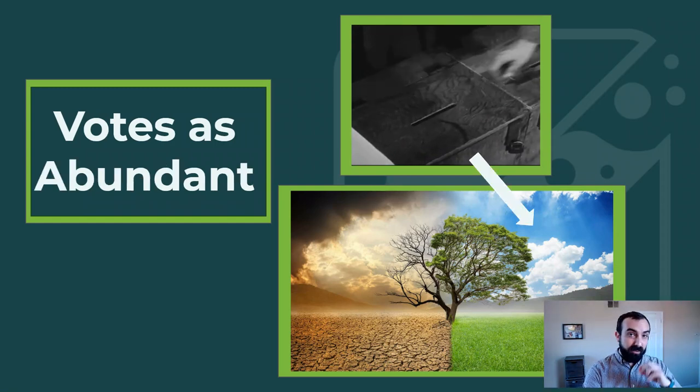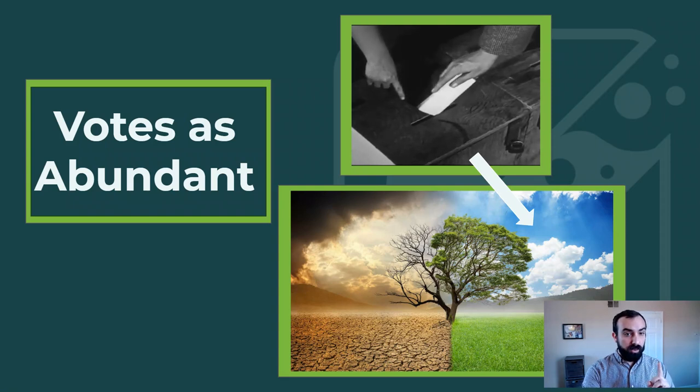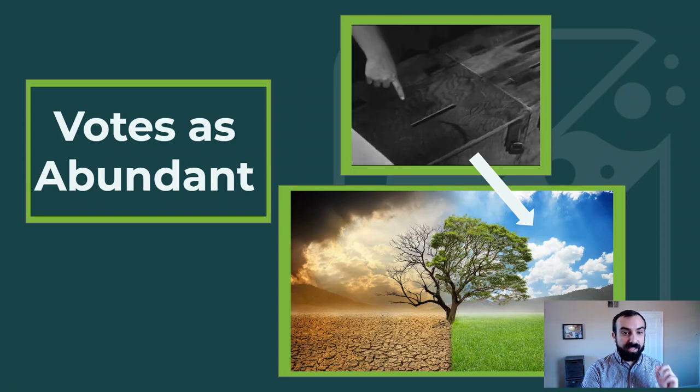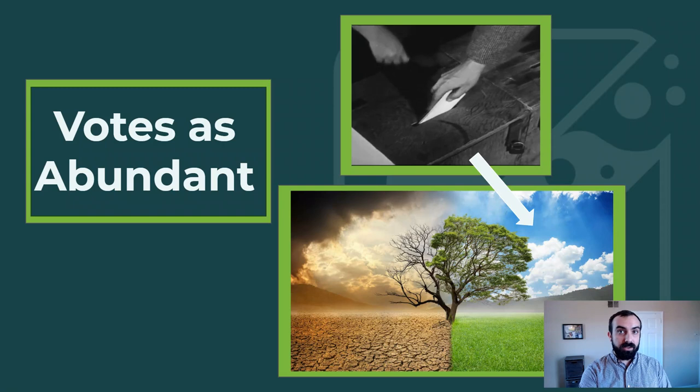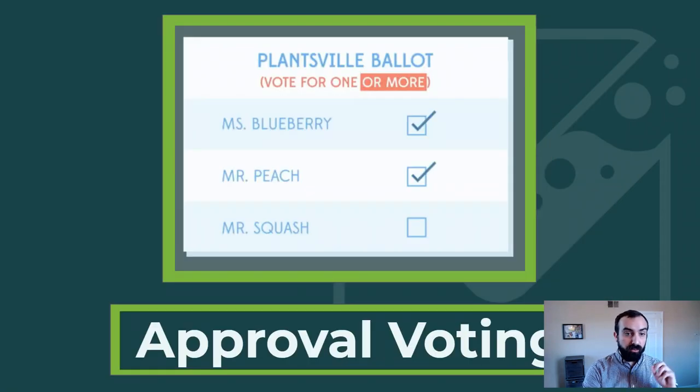This happens when instead of being allowed to only vote for one, you're able to vote for all the candidates you like. This is called approval voting. With approval voting, you give a yes or a no to each candidate, and the one with the broadest support wins. Simple addition.